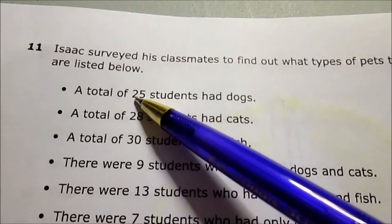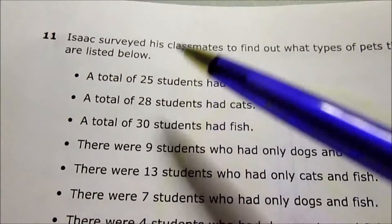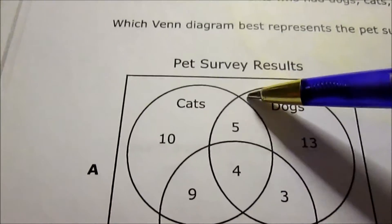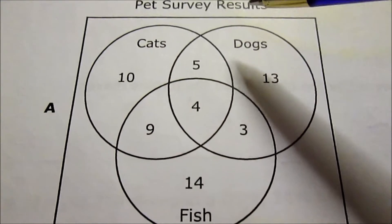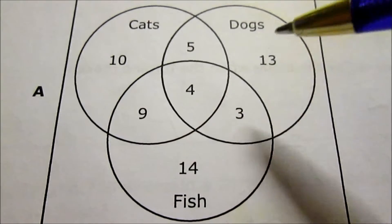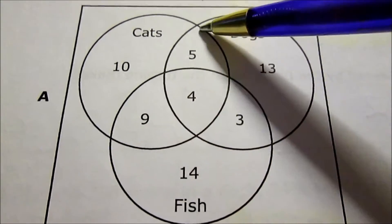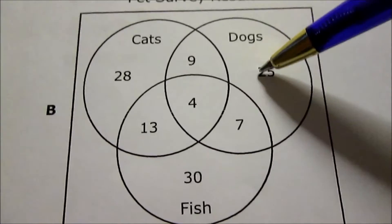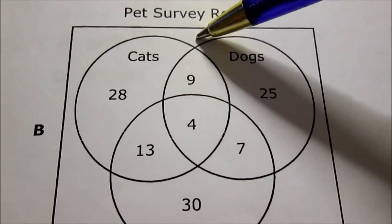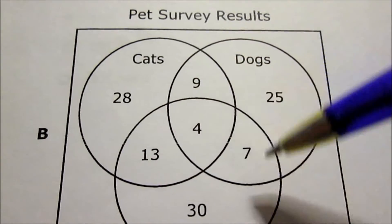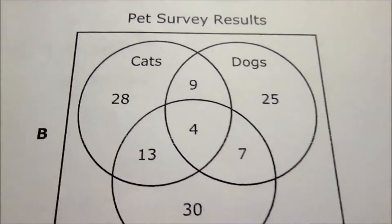First statement: 25 students had dogs, and that's a total of 25 had dogs. Looking at Venn diagram A in the dog circle, if I add this: 5 plus 4 is 9, 9 plus 3 is 12, 12 plus 13, yes, that's a total of 25. Let's go to the next one, B. If I added all these, since there's already 25 here, if I added more to 25 it would go over, so this one can't be it.